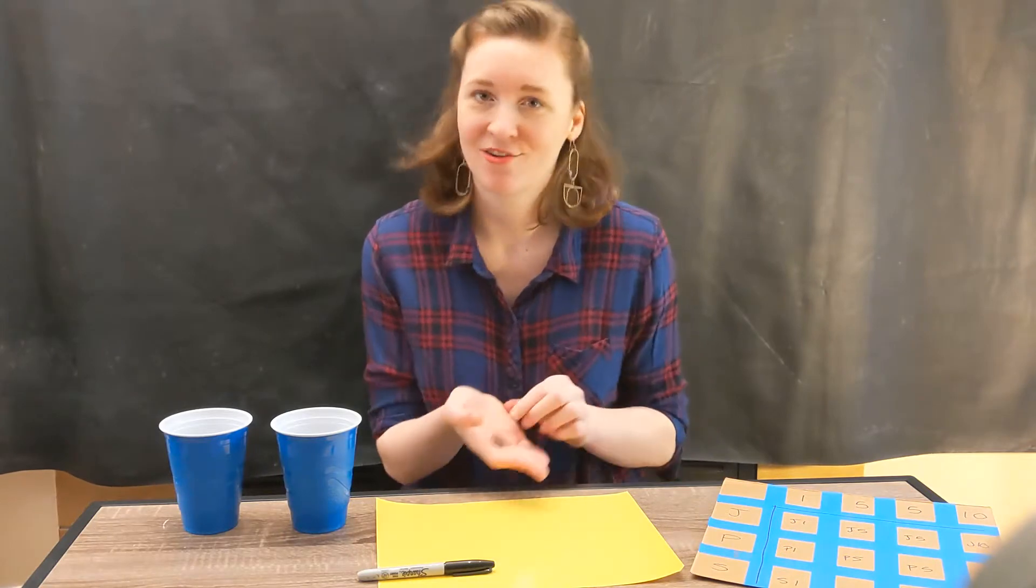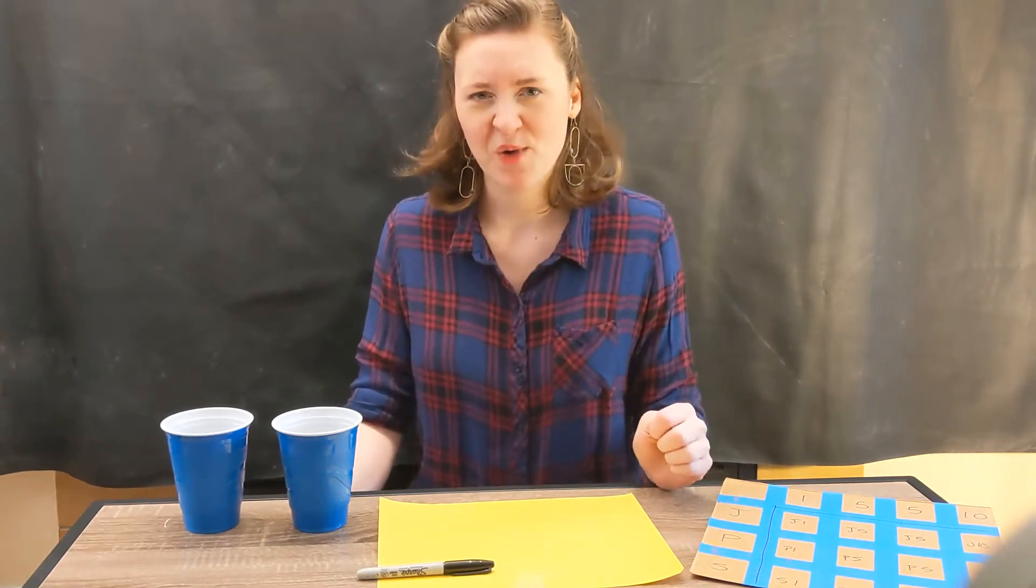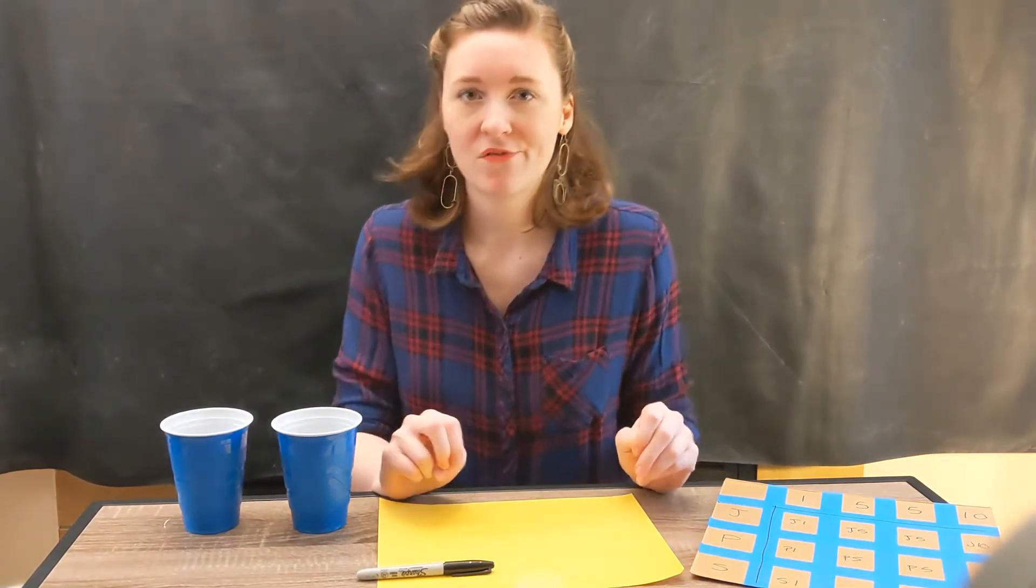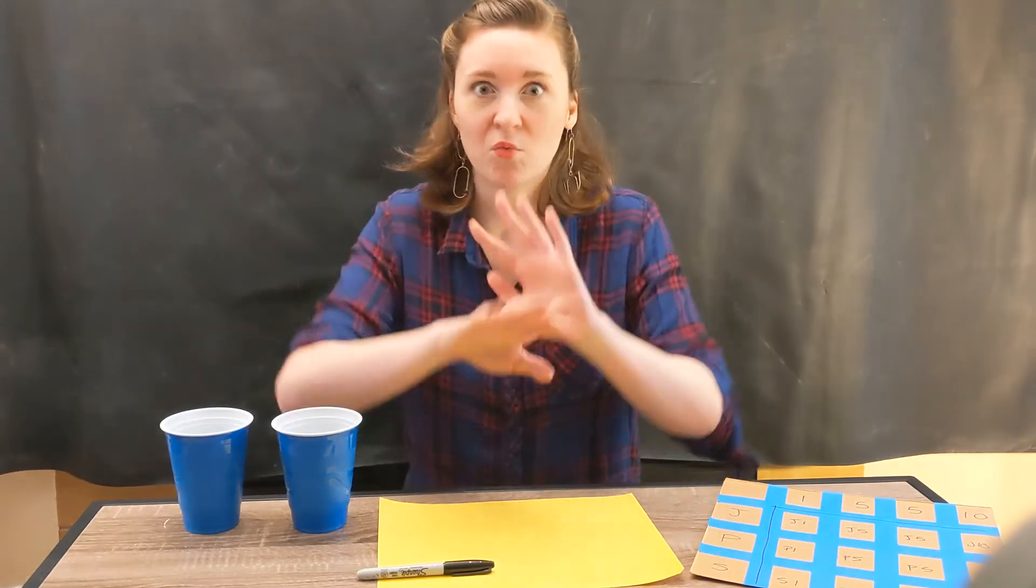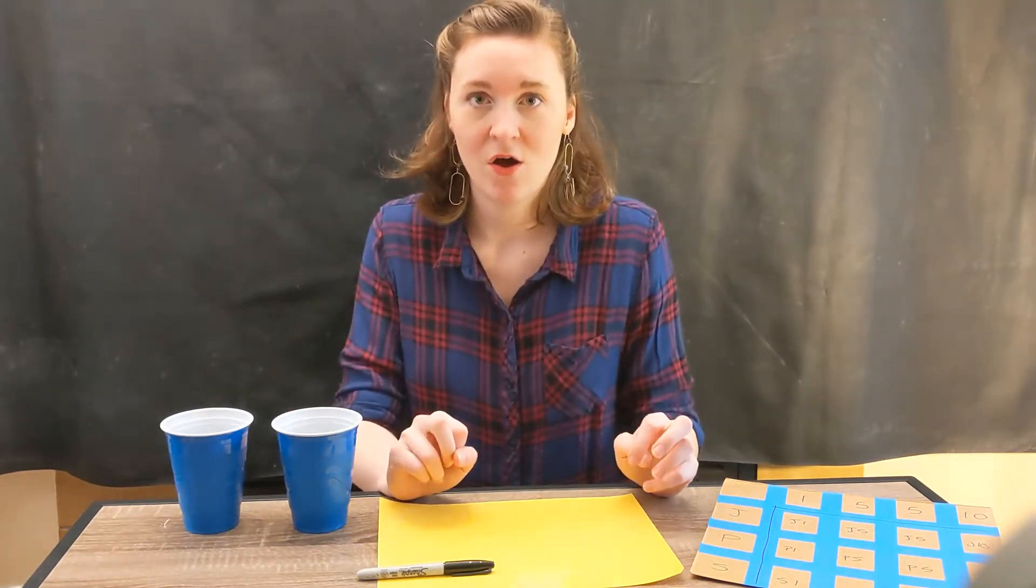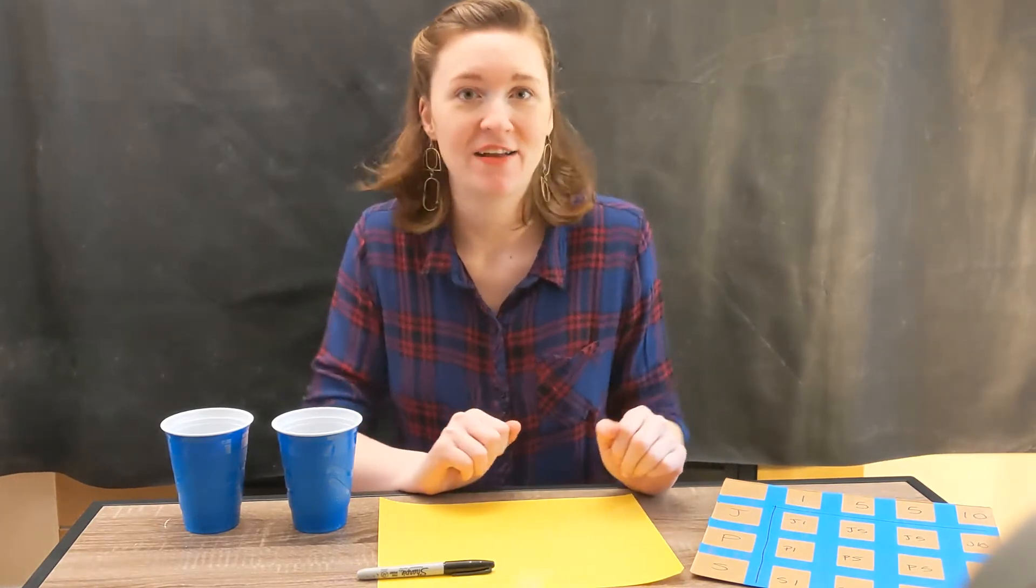We got heads, so we didn't get lucky that time, but that's a pretty simple probability problem, right? Because there are only two outcomes. What happens if you're trying to figure out the probability of something that has way more outcomes, or if you're doing an action multiple times? That's what we're going to find out today.